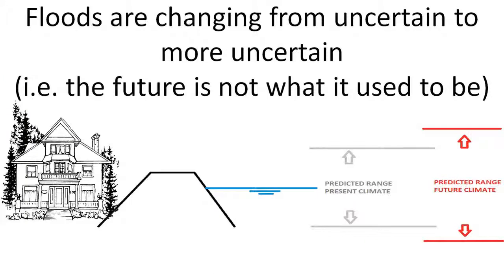The general conclusion is that floods, which are already uncertain, are becoming more uncertain. If you look at the chart in the lower right corner, the gray chart shows the predictive range that we have right now. Future climate brings more uncertainty, so we can — and should — give it a higher uncertainty range. That's the predictive range.